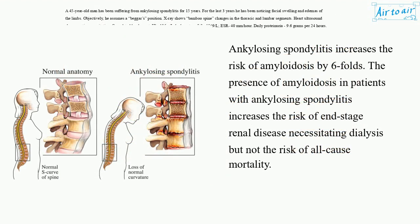Ankylosing spondylitis increases the risk of amyloidosis by six folds. The presence of amyloidosis in patients with ankylosing spondylitis increases the risk of end-stage renal disease necessitating dialysis, but not the risk of all-cause mortality.